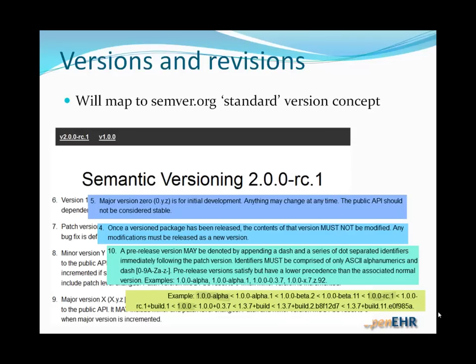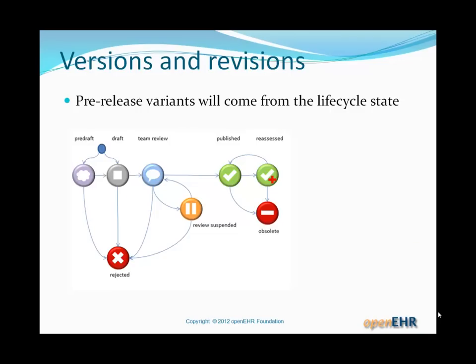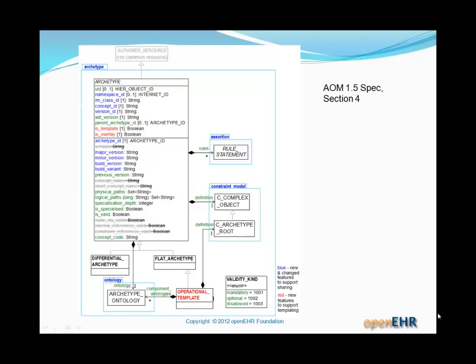The numeric part works as you would expect: 1.0.1 is less than 1.0.2 and so on. There are rules for when the major version and the minor version should be changed, and they're more or less the same as what we would use for archetypes, with pre-release variants probably coming from the lifecycle state. This shows the AOM class for archetype and where version information is maintained. Currently in the draft, it's shown as functions that extract major, minor, and build version information from an overall version ID, though that may change. The design logic will follow the previous slides.